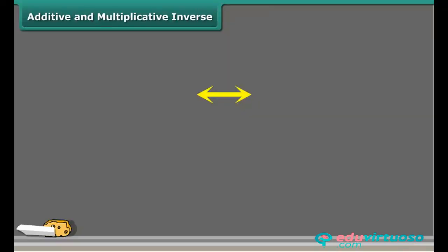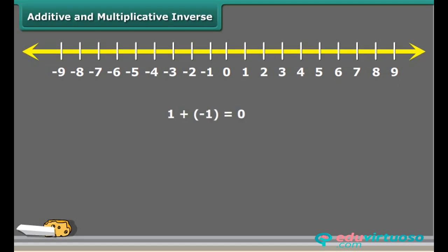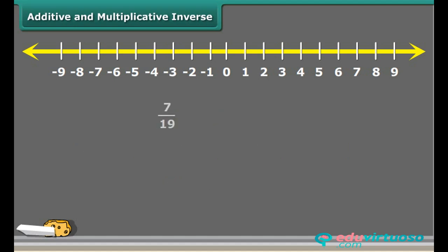You may have come across negative numbers while studying. Is minus one the negative of one? Yes, it is, because one plus minus one equals zero. So we say that minus one is the negative, or additive inverse, of one. Likewise, for any rational number — say three by seven — minus three by seven will be its additive inverse.